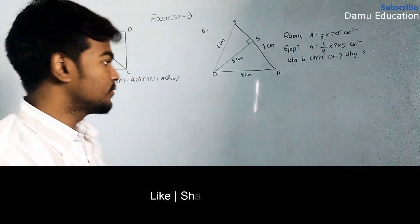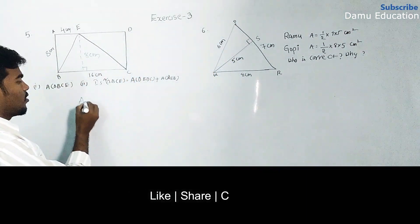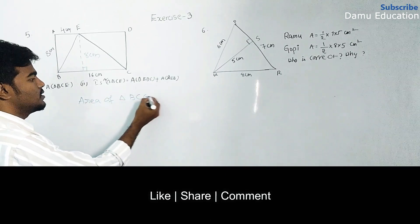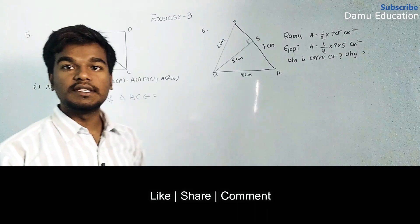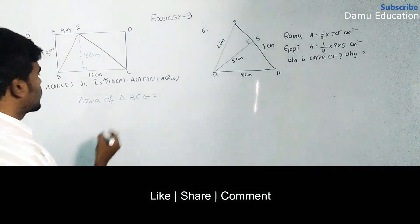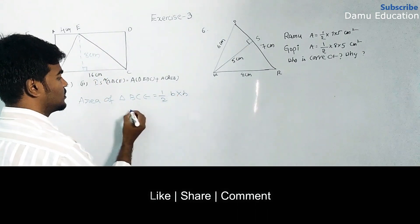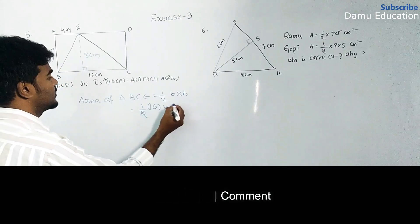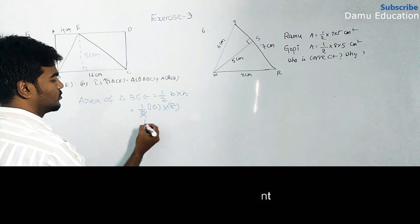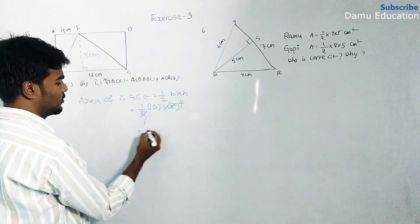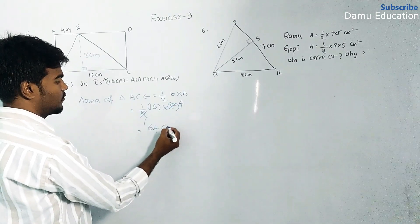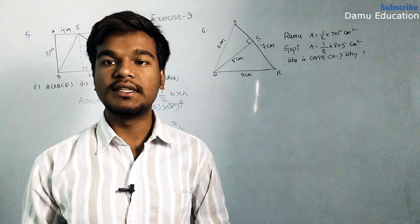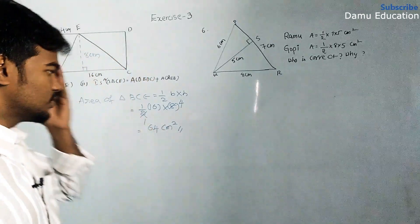What is the formula? Area of triangle BCE is half into base into height. So half into base 16 cm and height 8. So we get 64 cm square. The area of triangle BCE is 64 cm square.